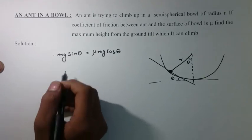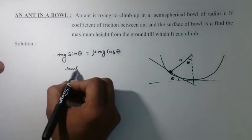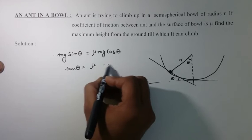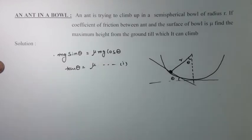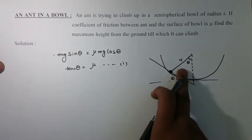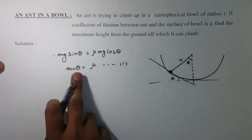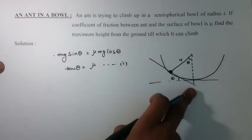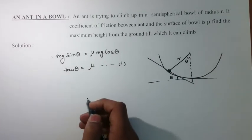And from here we can find tan theta equals mu. This is our first equation. Sometimes they can ask us what would be the maximum angle theta. Then this is the maximum angle theta. Theta is the tan inverse mu till which this ant can climb.